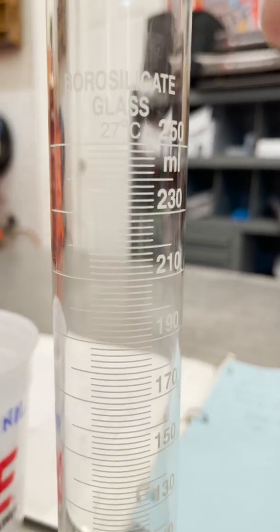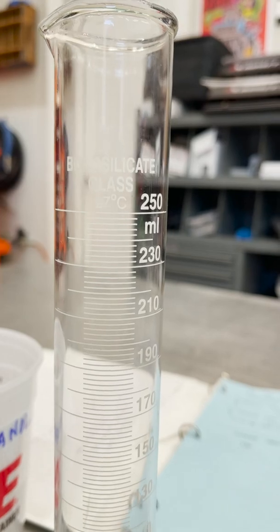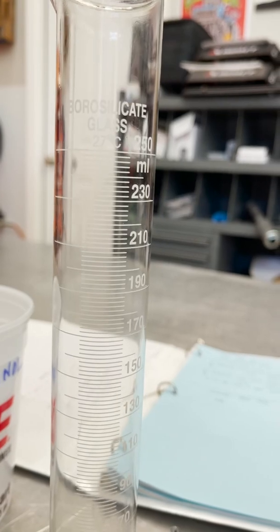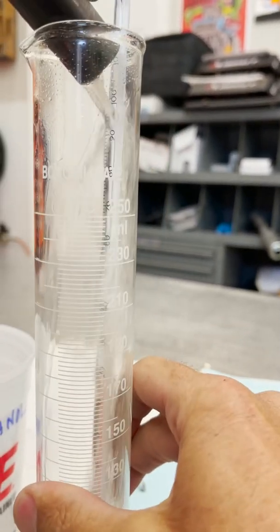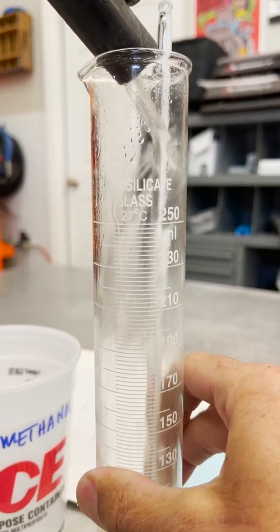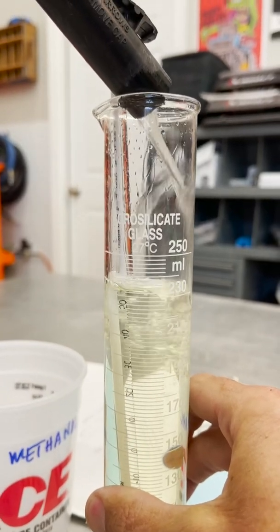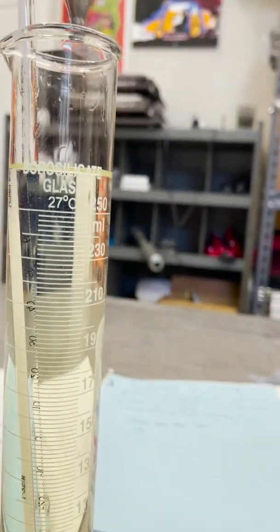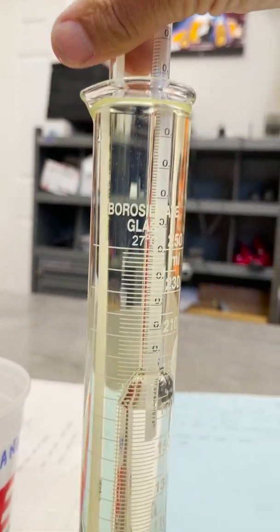All right. So right here, we have our 250 milliliter test tube. Go ahead and put the fuel in. We're going to fill it to 250. You can go over. The thing is, if you go under, sometimes the bobber bottoms out in the bottom of the glass. If you put too much in, you go and you put your hydrometer in, and then you'll overflow the tank.